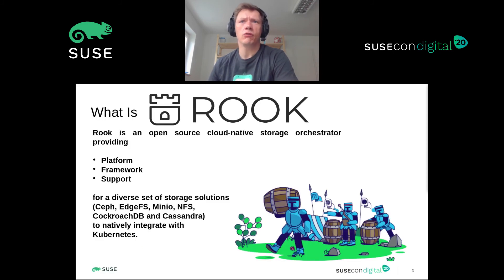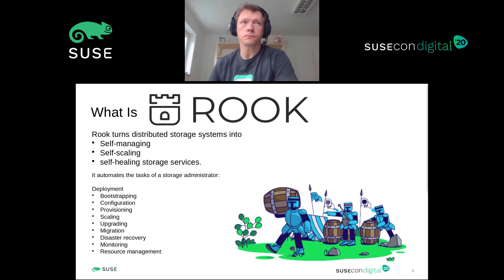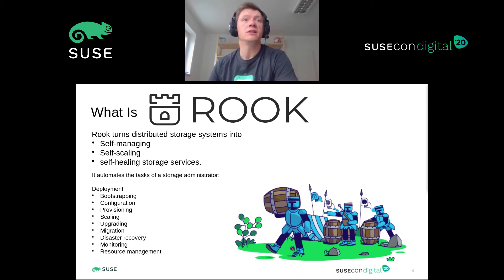Rook is an open source cloud-native storage orchestrator, providing a platform, framework, and support for a diverse set of storage solutions to natively — and this is the key point — integrate with Kubernetes. Besides Ceph, which we will look at, Rook also supports Minio, NFS, and CephFS. Rook brings all the advantages of automated application container management like Kubernetes to distributed storage systems, turning them into self-managing, self-scaling, and to a certain point self-healing storage services.